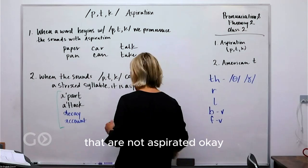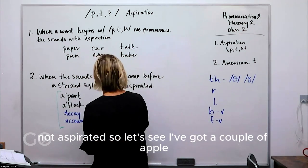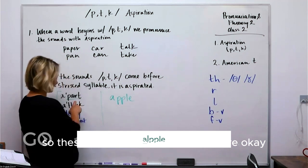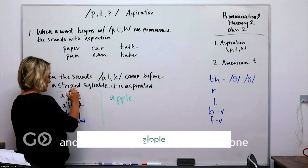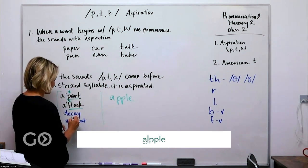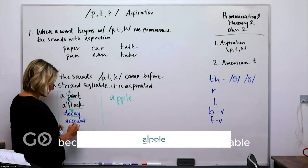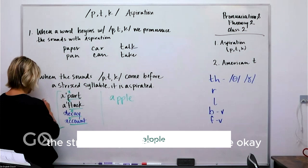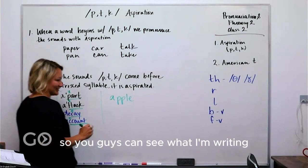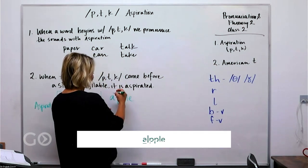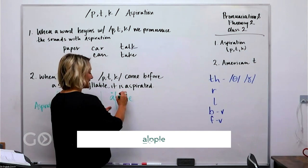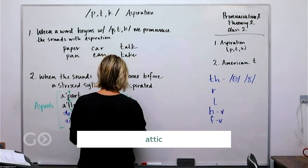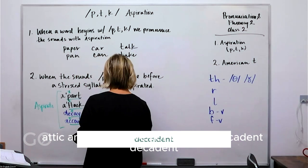In the non-aspirated examples, the stress falls on a different syllable. If P, T, or K starts the stressed syllable, we aspirate. But if the syllable containing that sound is not stressed, we don't aspirate. So with 'apple,' the stress is on the first syllable — the P here is not stressed and therefore we don't aspirate. Same with 'attic' and 'decadent.'